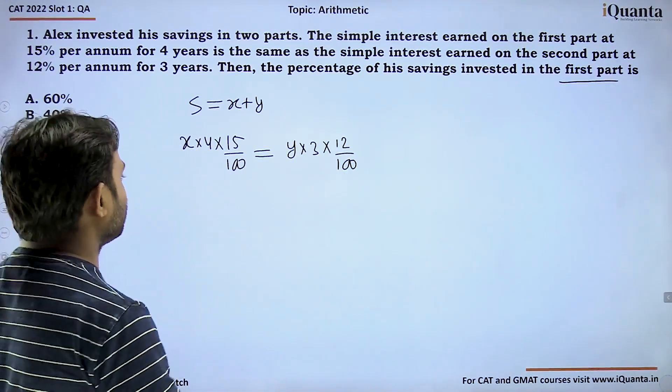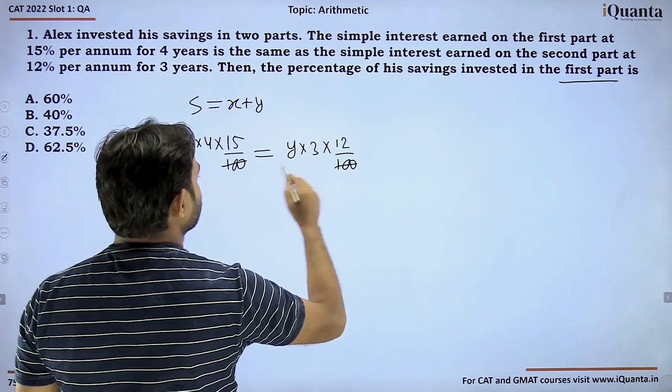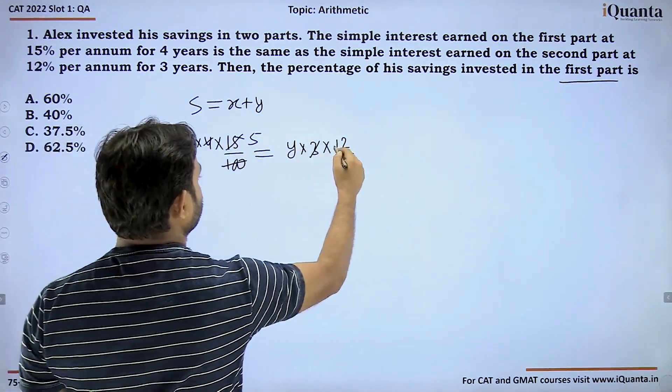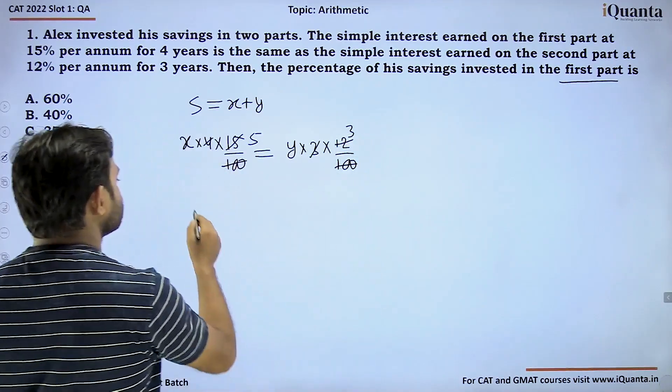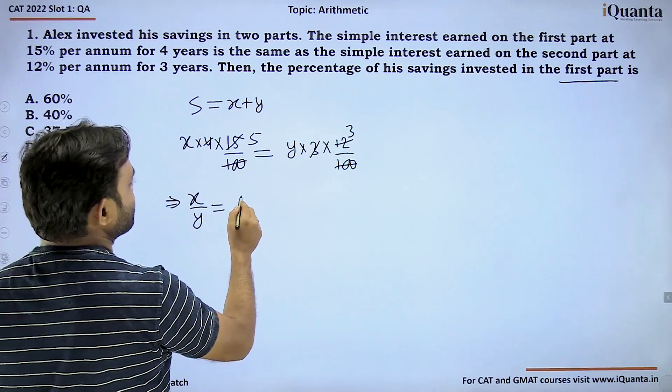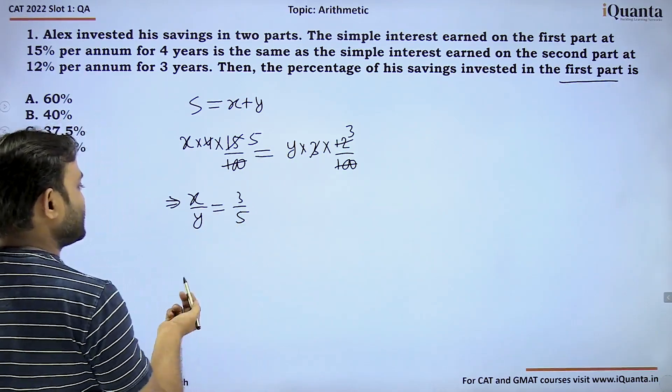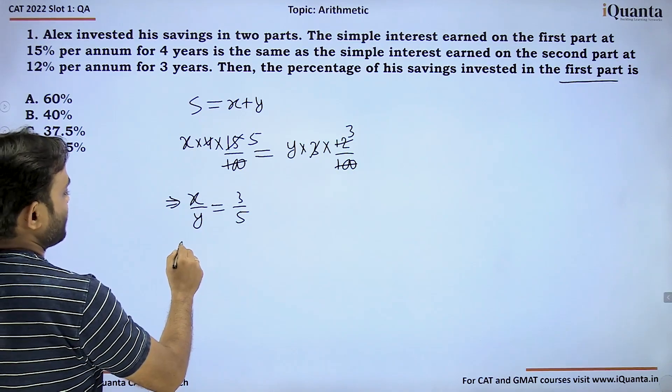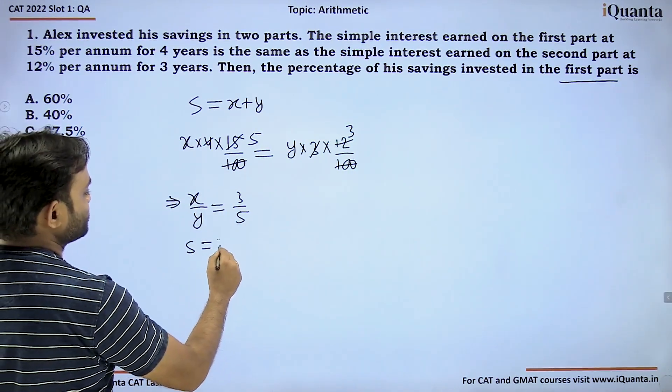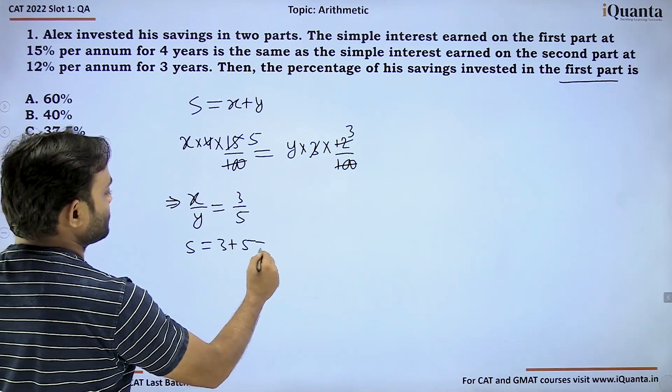Let's say total savings is equal to x plus y. The interest earned on the first part will be x into 4 into 15 upon 100 and this will be equal to y into 3 into 12 upon 100. From here we can say x upon y is equal to 3 upon 5.